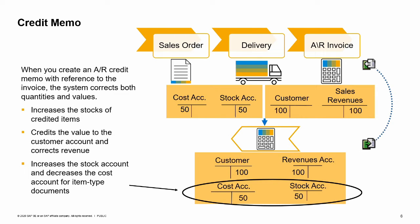An AR Credit Memo, also called a credit note, reverses either partially or fully the journal entry created by an AR invoice. When you create an AR Credit Memo with reference to the AR invoice, the system corrects both the quantities and values in the AR invoice. The system increases the stocks of the credited items, credits the credit memo value to the customer's account in the general ledger, and corrects the revenue by the same amount. If the credit memo is an item type credit memo with rows for inventory items, then the journal entry will also increase the stock account and decrease the cost account.